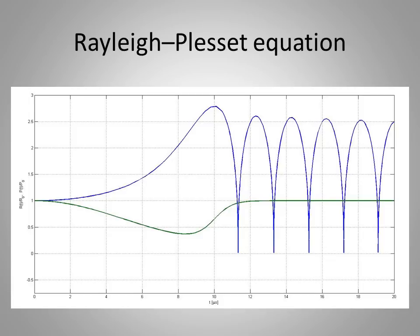I began this summer by using the Rayleigh-Plesset equation to model the dynamics of gas bubbles in water subjected to pressure drops of various forms. The blue curve measures non-dimensional bubble radius versus time, while the green curve shows the non-dimensional pressure function. Note how in the span of 10 microseconds, the bubble collapses and rebounds five times. These collapses are particularly violent, showing that the bubble shrinks down to nearly one percent of its initial radius.